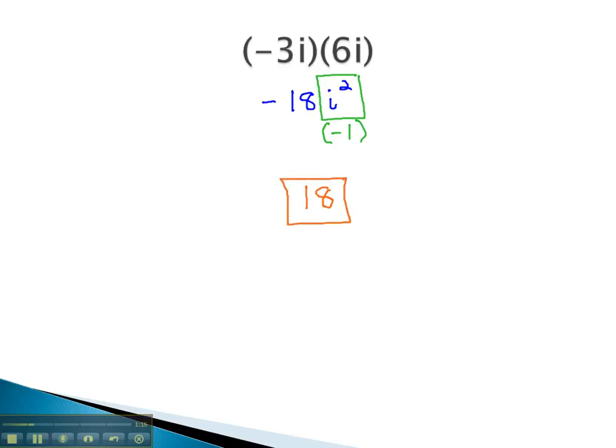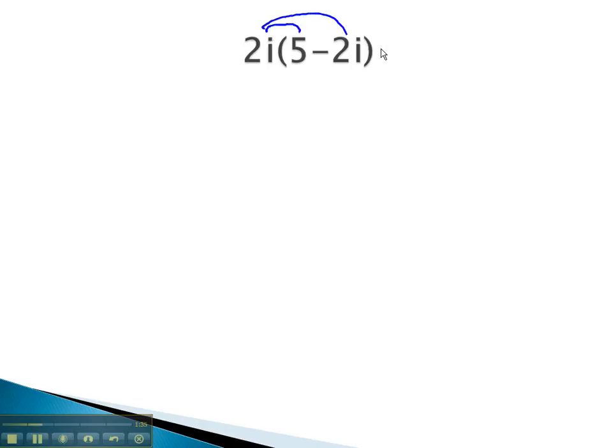Let's take a look at another example, where we multiply using i, remembering that i squared is equal to negative 1. In this problem, we've got something in front of parentheses. We've seen this before. We know it means we must distribute. 2i times 5 is 10i, and 2i times negative 2i is negative 4i squared.